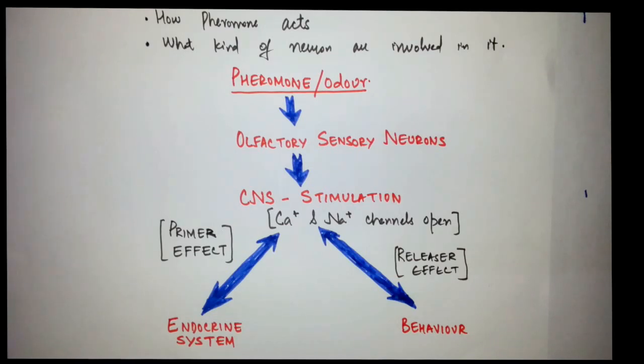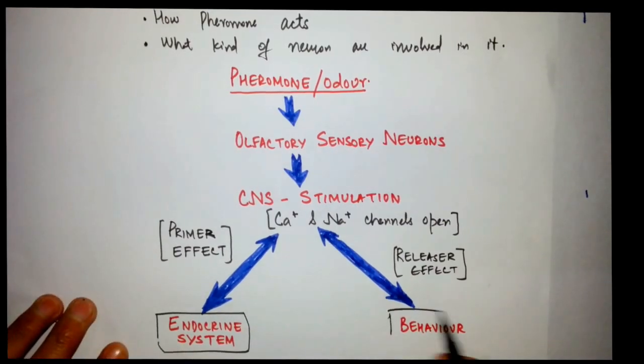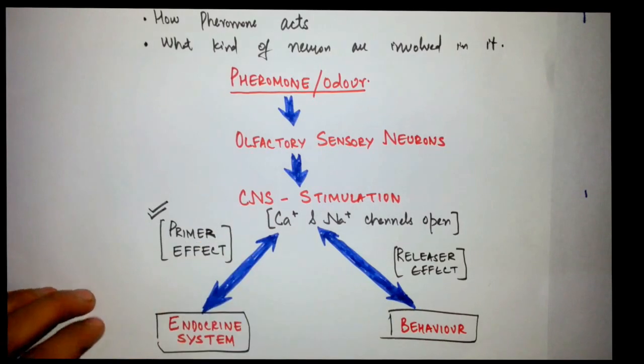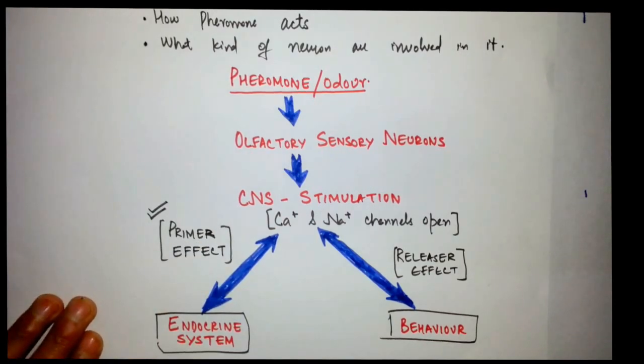When there is CNS stimulation, the animal knows what they have to do, so they respond with their specific responses. If the endocrine system is stimulated, we call it a primer effect. There is a long-term effect - there may be changes in the endocrine system and secretion of sex hormones when courtship rituals occur. When there is secretion of sex hormones for aggregation, these are temporary effects - they need to aggregate at the site where the pheromone has been secreted, so we call it a releaser effect.